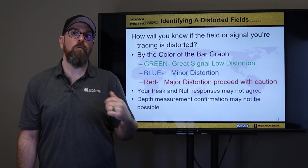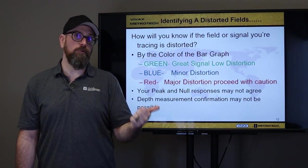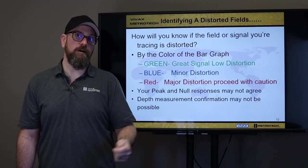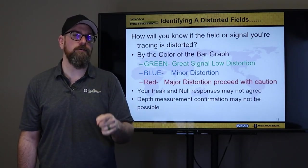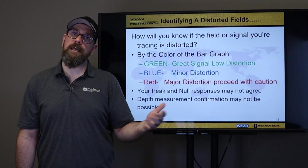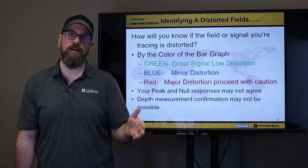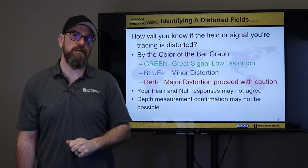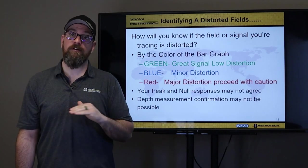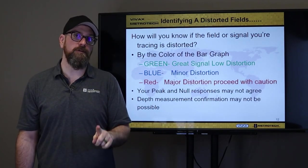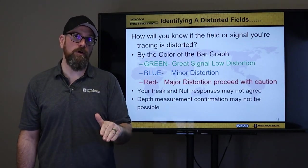Because we can now see in three-dimensional, we try to show you in a color code what that field looks like beneath us. So, we show our blue, green, and red bar. Green, mean very low distortion, should be a great locate, probably what you're hooked up to. Blue, again, is probably what you're hooked up to, gonna be a decent locate. Maybe your peak null is off a little bit, and maybe your depth is off a little bit. Red is maybe not even at all what you're hooked up to, not what you wanna be locating. High distortion, and your peak null and your depth will not work.